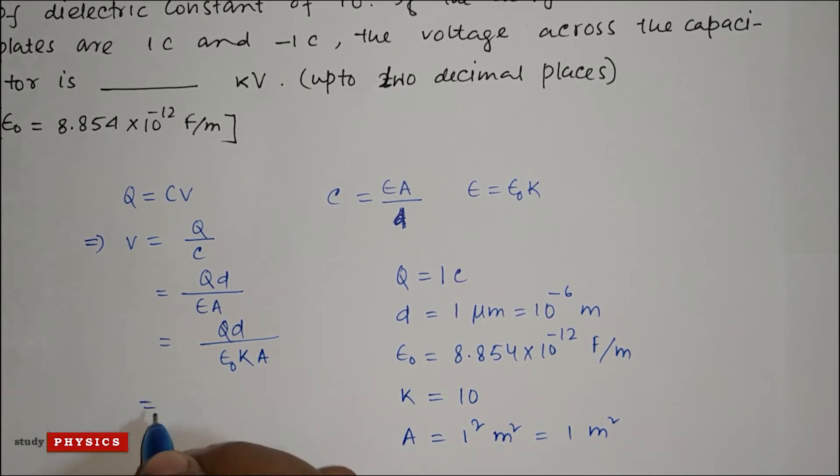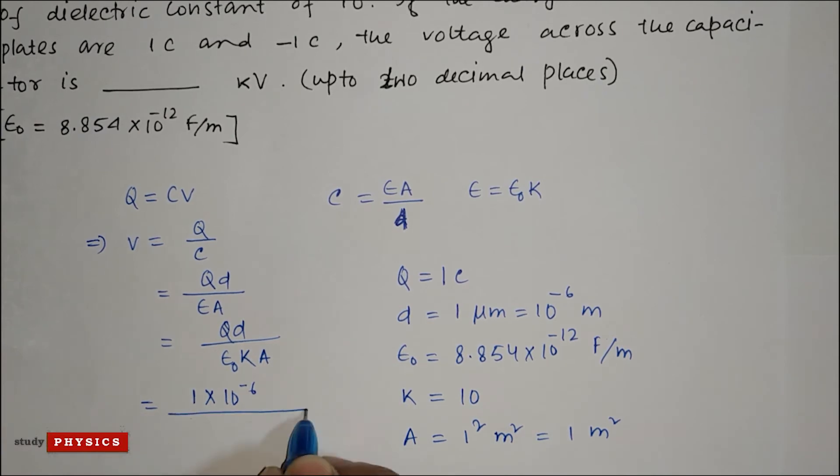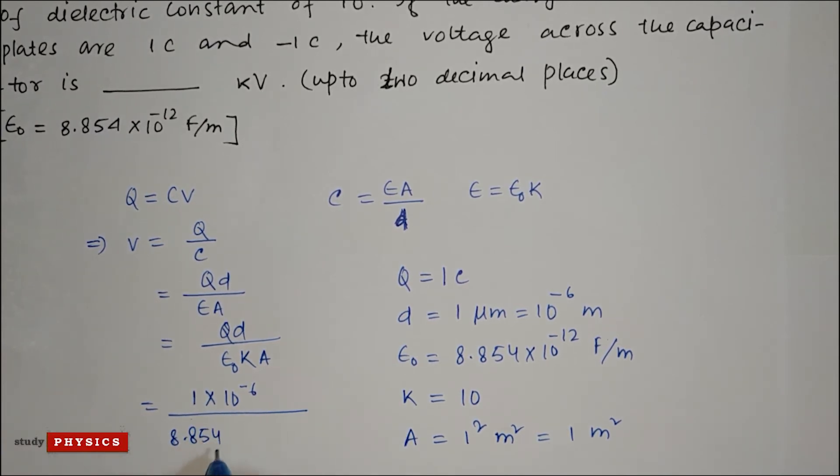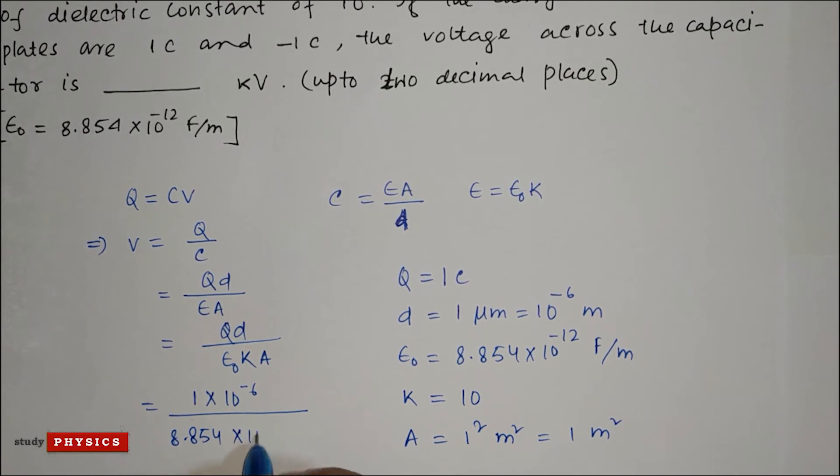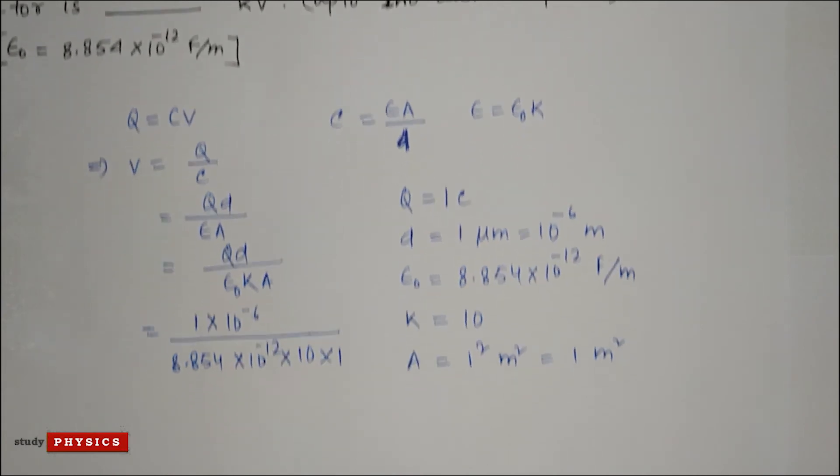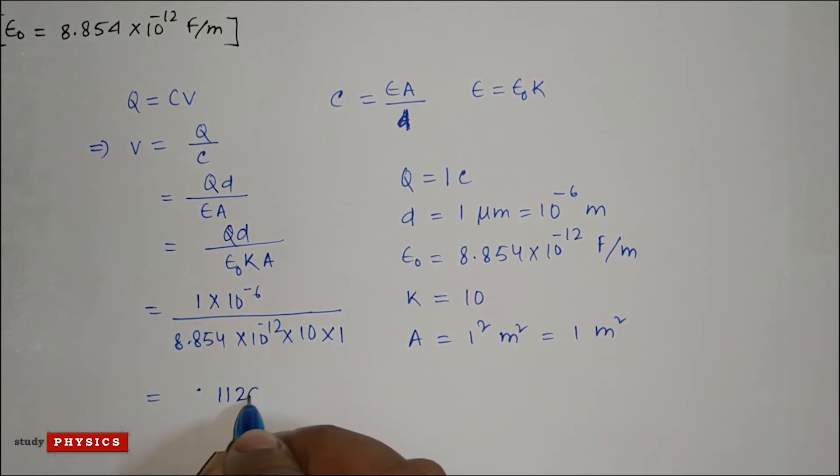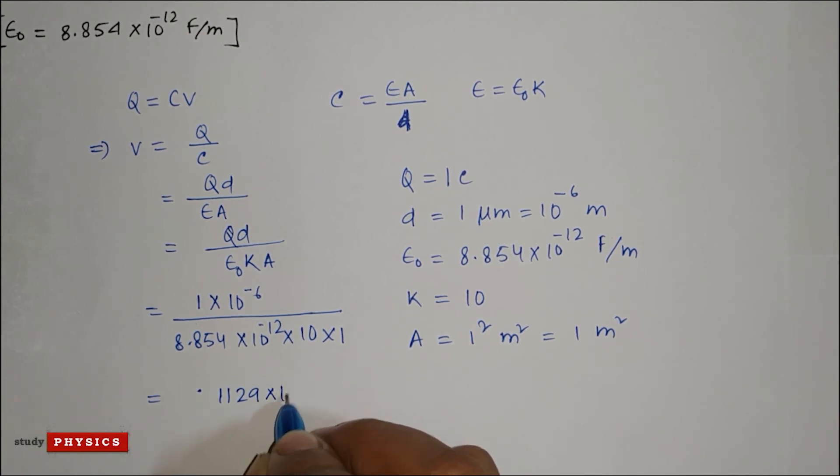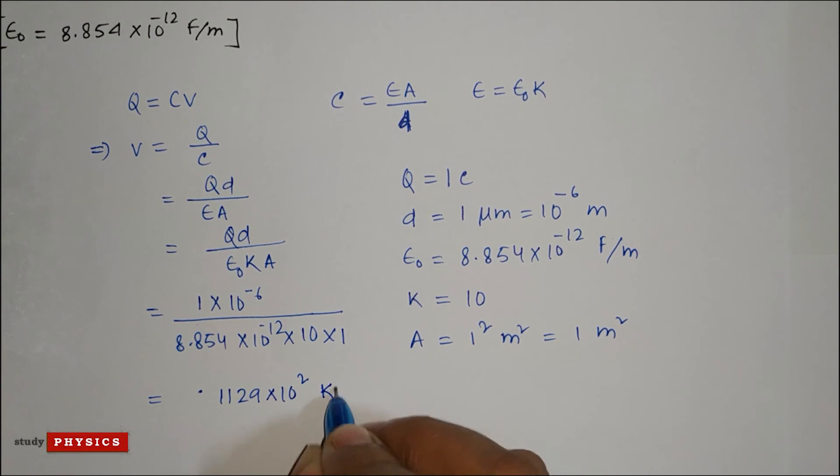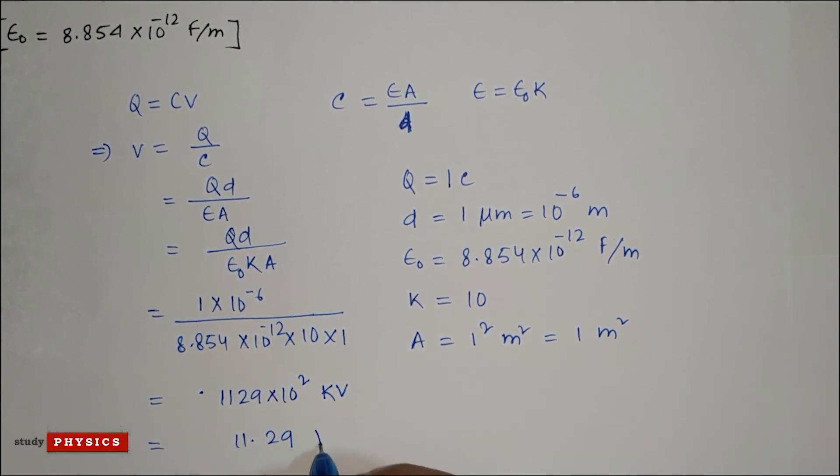Just put these values: 1 coulomb times 10 to the power minus 6 divided by 8.854 times 10 to the power minus 12 times 10 times 1. And after calculating this, the value will be 0.1129 times 10 squared kV, so 11.29 kV.